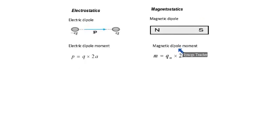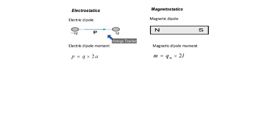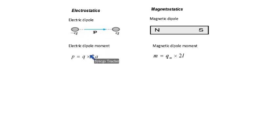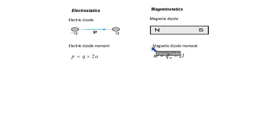Now we will move on to the discussion of dipoles — electric dipole and magnetic dipole. In electrostatics, a dipole is defined as two equal and opposite charges separated by a small distance. Here, this is +q and this is −q; they are equal and opposite, separated by distance 2a. One more physical quantity is required to represent the direction of the electric field — that is the electric dipole moment. In magnetostatics, we need the magnetic dipole moment.